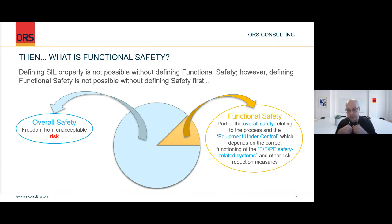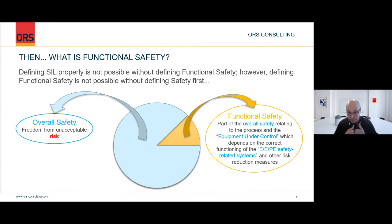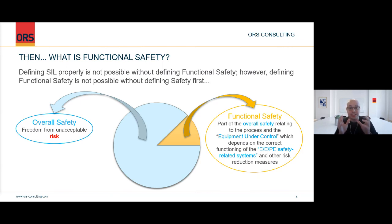Safety is freedom from unacceptable risk. That is overall safety. Whenever you're part of an activity that may have hazardous consequences — which is basically everything humans do: driving a car, getting on a plane, going out on your bike, or operating a crude oil refinery where flammable and toxic things may escape — all of those activities have a risk related to them. And there is a level at which that risk becomes unacceptable. Safety is freedom from that unacceptable level of risk.